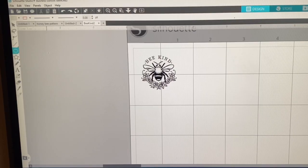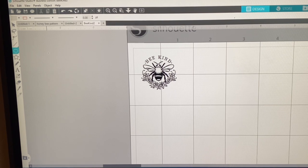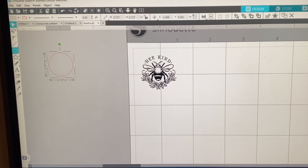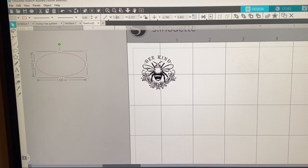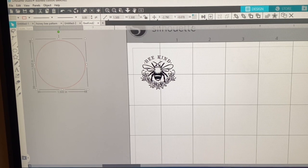So the easiest way to do that to try to find the perfect size is you're going to make a circle of the size of popsocket. Mine is a 1.5 by 1.5. If you hit the shift key as you're making a circle, it will make a correct circle and not an oval.